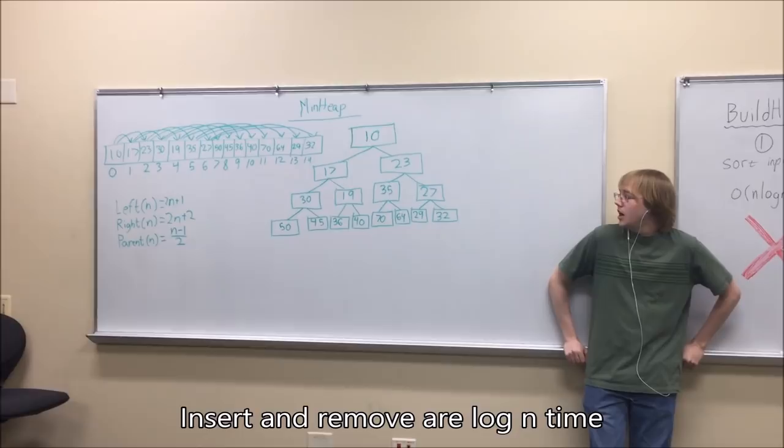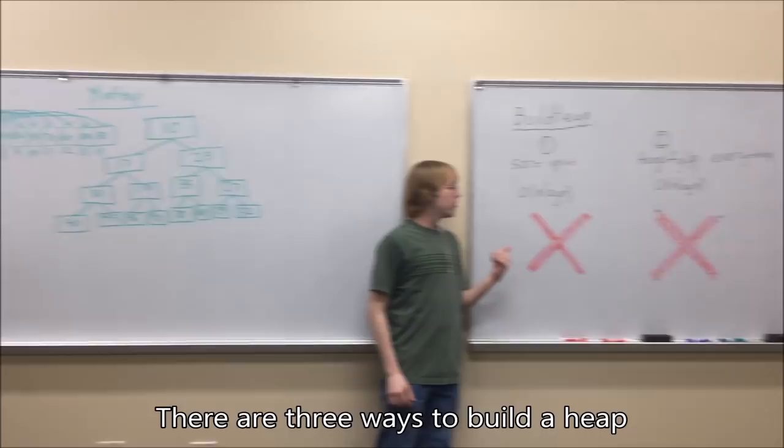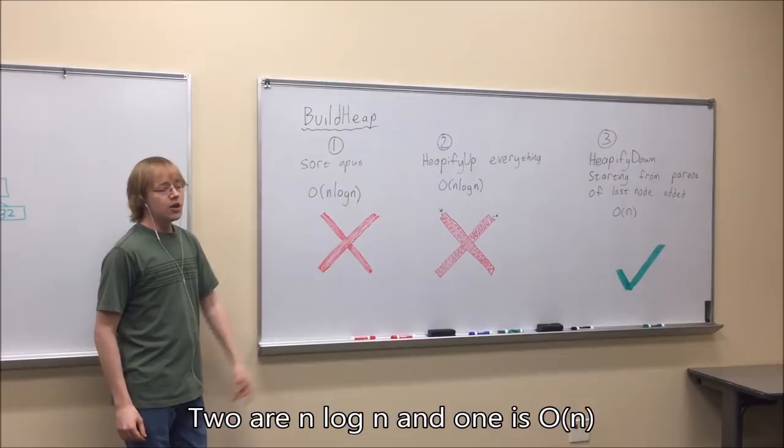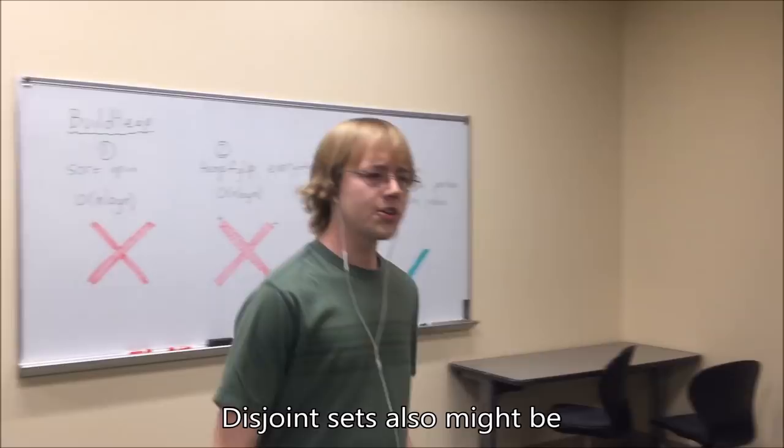Heaps — the priority queues. Insert and remove are O(log n) time. From root to leaves, the min is always increasing. There are two ways to build a heap: O(n) and O(n log n). Make sure you know which of these is clearly best.